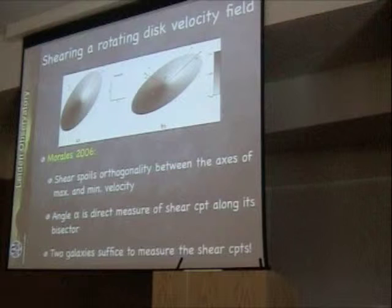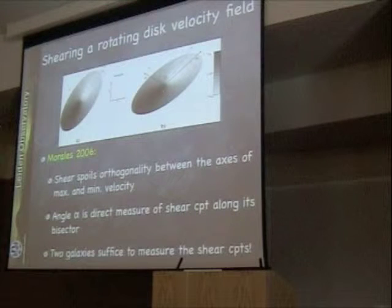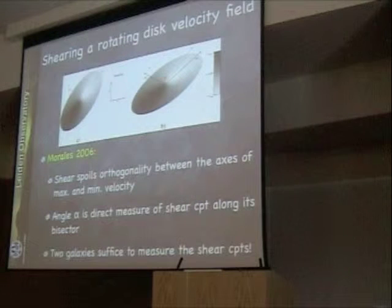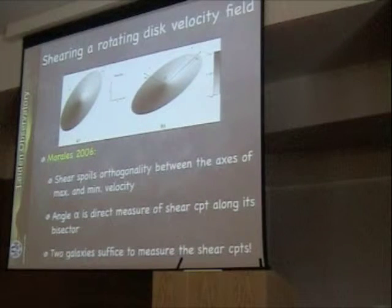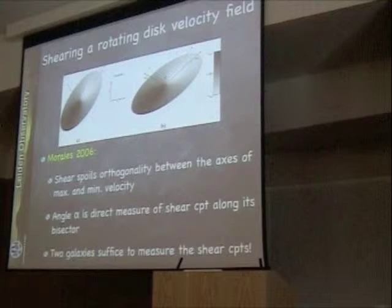If you shear it in this direction, what happens is that you open up this right angle — this angle alpha between the axes of maximum and minimum velocity — opens up beyond 90 degrees, and that's a very direct measurement of the shear. All you have to do is ask how much you have to close it back into 90 degrees, and that's how much it was sheared. So that gives you a perfect measurement of the shear in this direction.